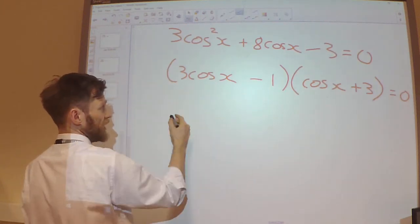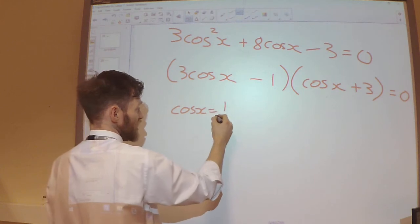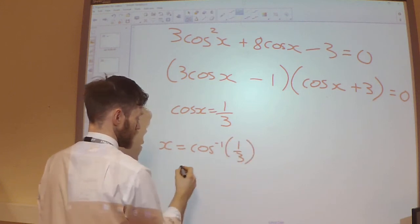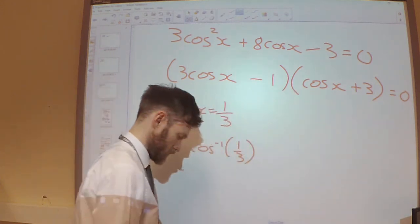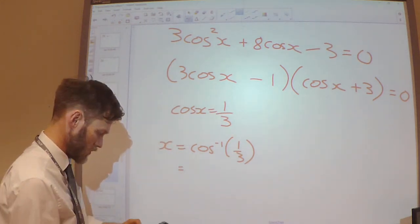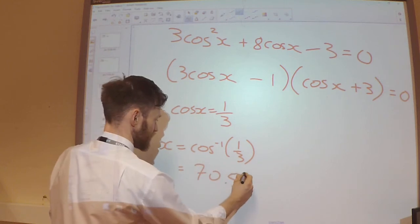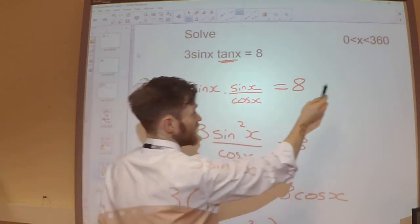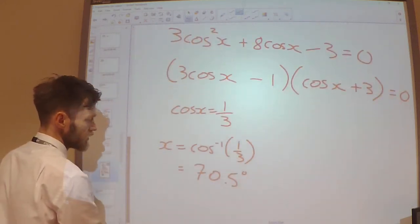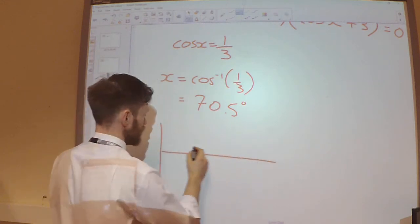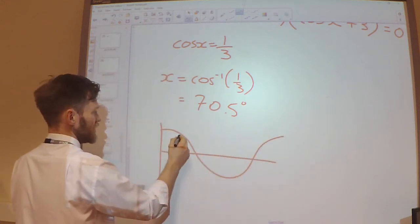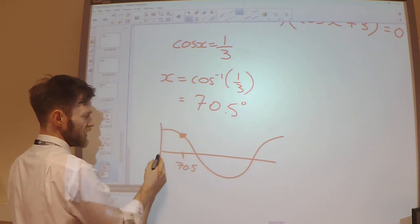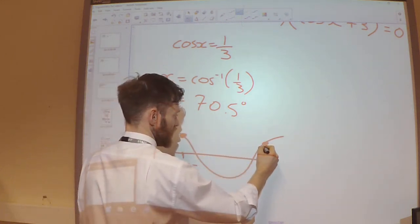So from this bracket, cos x would need to equal 1 third. So 2 cos inverse. And that is 70.5 degrees. Check the range. The range is 0 to 360 again. So draw my graph for cos. 70.5 is roughly about there. So this solution is going to be the same, looking across here, as this solution over here.